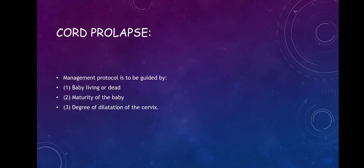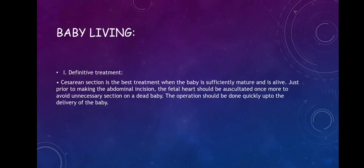Management of cord prolapse: the protocol is guided by the following — 1) is the baby living or dead, 2) what is the maturity of the baby, and 3) what is the degree of dilation of the cervix. If the baby is living, the definitive treatment is a caesarean section when the baby is sufficiently mature and alive. Just prior to making the abdominal incision, however, you need to auscultate the fetal heart rate once more to avoid unnecessary caesarean section on a dead baby. The operation should be done quickly up to the delivery of the baby.